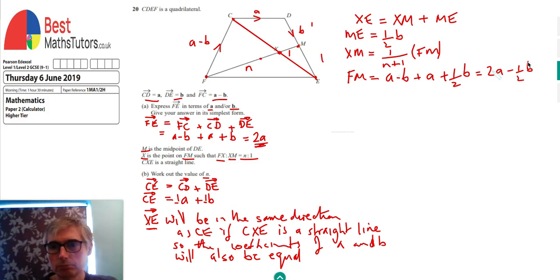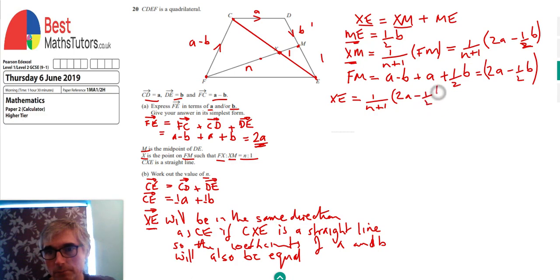I can now put that back into what I've got for FM. That would mean XM equals one over N plus one times by 2A minus half B.